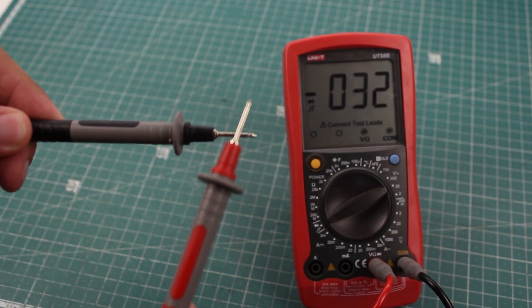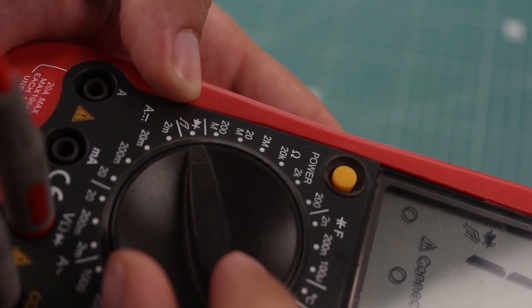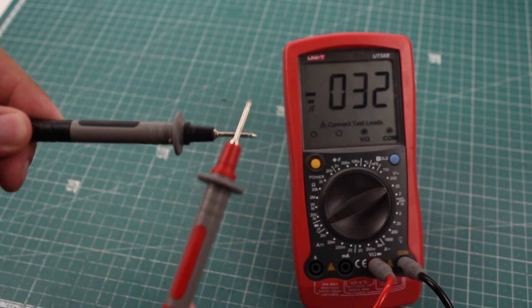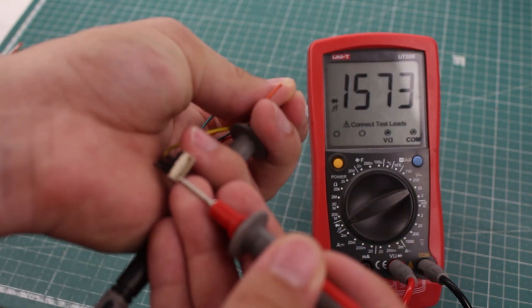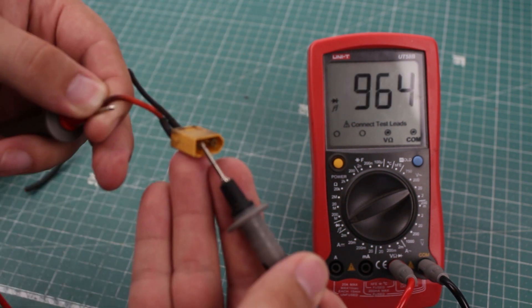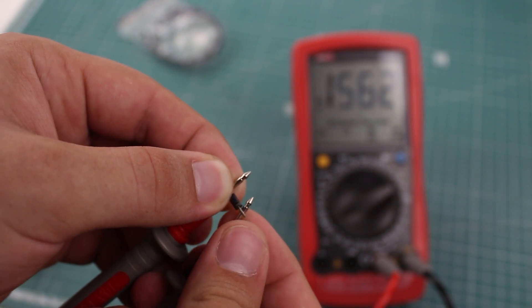Now, let's see how to test continuity. The positive probe stays in the voltage port and the selector switch goes to the diode or musical symbol like this one. When we touch the probes together, the meter beeps, letting us know that there is continuity. This is very useful when you need to check which wire is connected to which pin on a connector, or when you want to check if something is connected right. You can also use it to check the polarity of a diode.